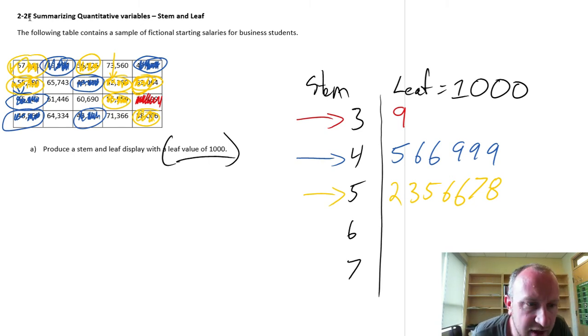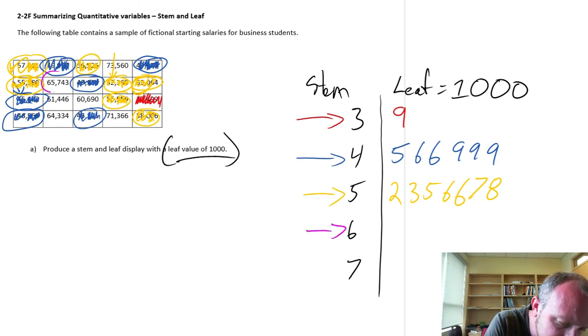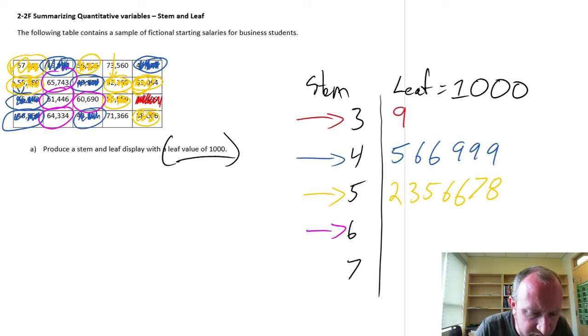Okay, and our next stem value, moving on, is a 6. So here's 1, 2, 3, 4 values there. Ignore those 3 digits in each. And I have a 0, a 1, a 4, and a 5. 0, 1, 4, and 5.